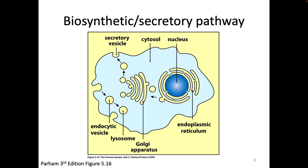This image is color coded. The cytoplasm is light blue, the nucleus is dark blue, and all of the parts of the biosynthetic secretory pathway are in yellow. You can see all of these compartments that are connected to one another in yellow. You'll also notice that the area outside of the cell is yellow.